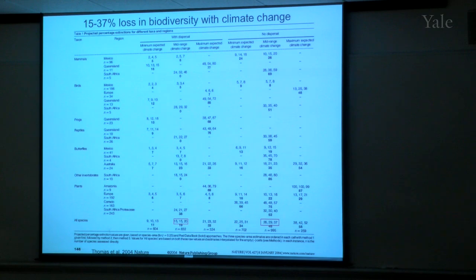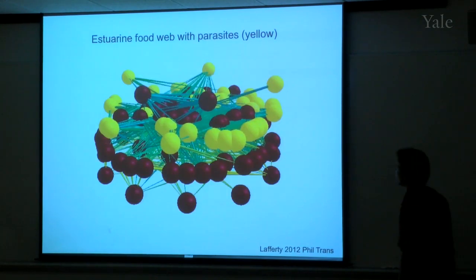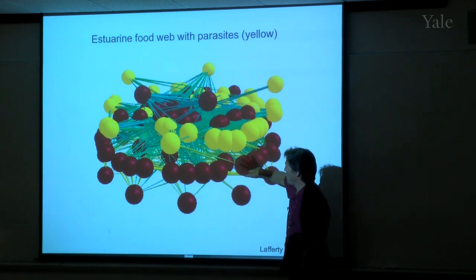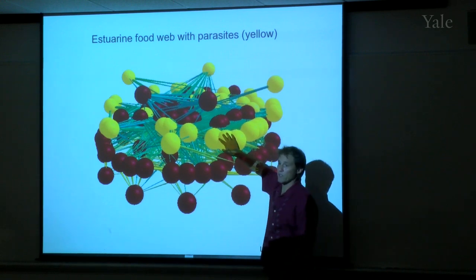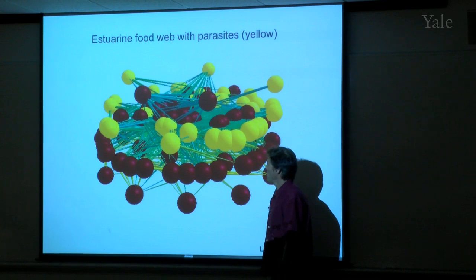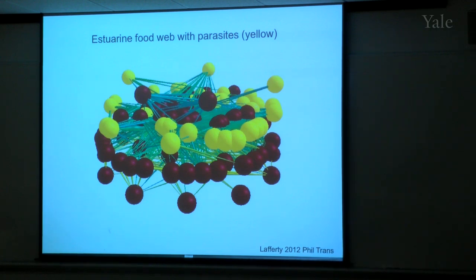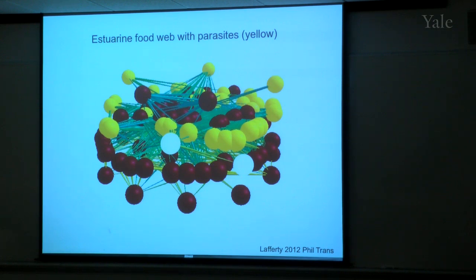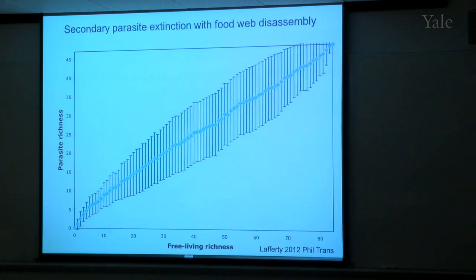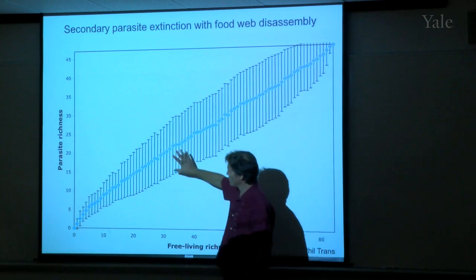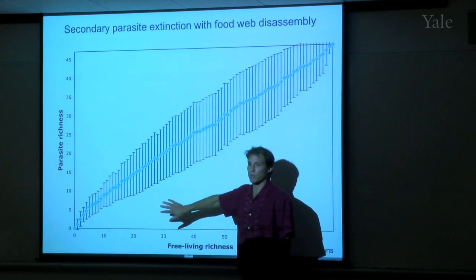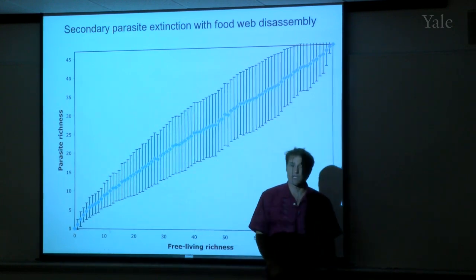Once we have these food webs built, we can do simple computer experiments where we drive biodiversity down — cause a species to go extinct. If that's a fish with a host-specific parasite, that parasite will probably go extinct too. We do these sequential extinctions thousands and thousands of times to plot the expected relationship between free-living richness and parasite richness. Basically, as we reduce free-living richness, we should expect a decline in parasite richness. We can go to the field to get empirical estimates of this.